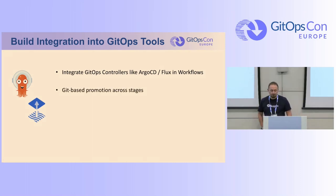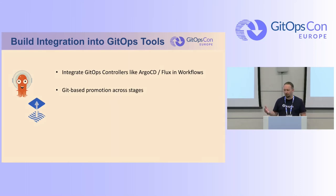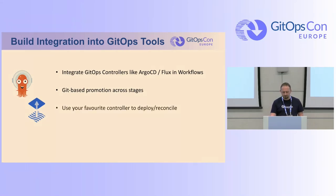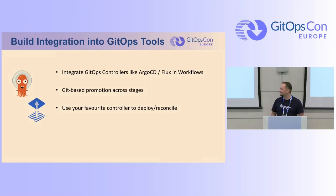As we want Git as a single source of truth, we want the current state always in the Git repository. We would do promotion not workflow-based but Git-based via the repository. In a later step, it should be possible for you to use your favorite controller to deploy and reconcile — whether that is Argo, Flux, or any other tool which will come in the future.